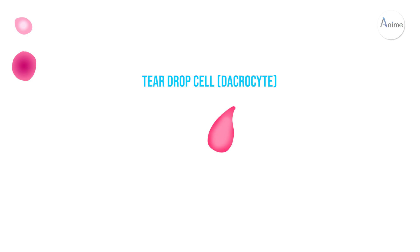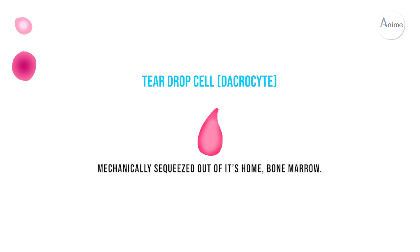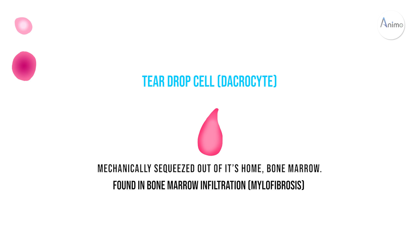The next RBC morphology is tear drop cell, which is also called dacryocyte. It is actually the shape of RBC which is found when RBCs are in a rush to make their way out of the bone marrow. So it is found in bone marrow infiltration like myelofibrosis or megaloblastic anemia.